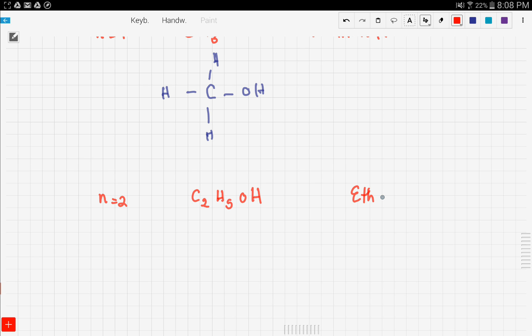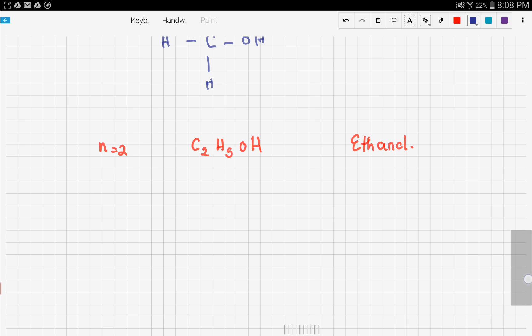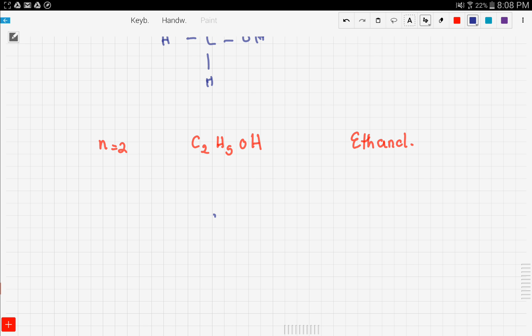Now how do we draw ethanol? We have two carbons and then we have five hydrogens bonded to them, so three right there, two here, and an OH. Now let's move on to the third member.